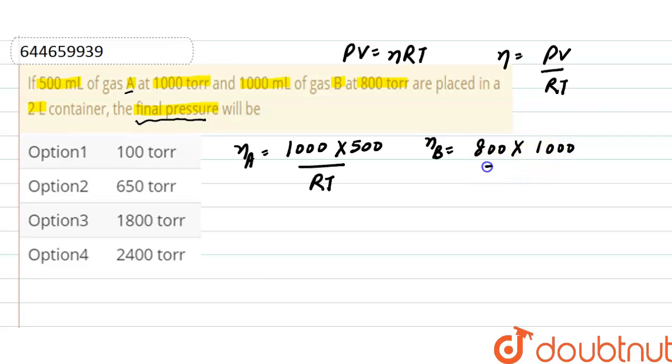And here, final pressure equals—as from this equation we can write pressure as nRT divided by V, so final pressure will be total moles into RT divided by total volume.